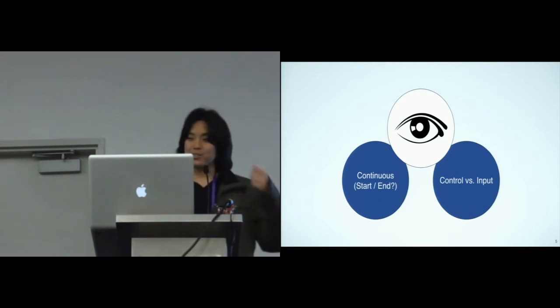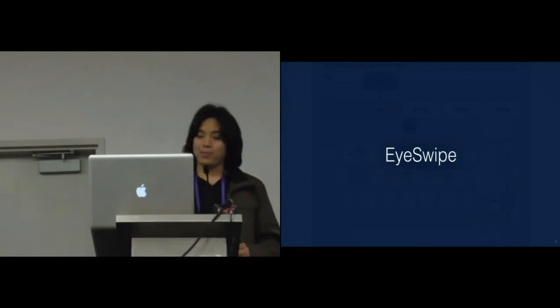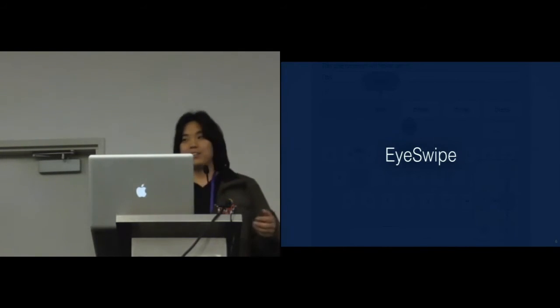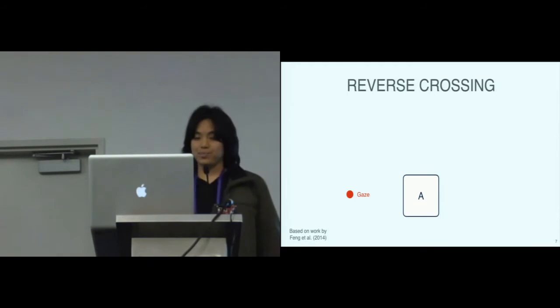Considering these challenges, we propose iSwipe. So the first challenge is how to determine when the user started and stopped swiping a word. And instead of having to guess when these events occur, iSwipe requires the user to explicitly select the first and last letters of the word using reverse crossing. So to select a key with reverse crossing, the user must initially look at it, and shortly after that, an action button will pop up showing the available options. For example, start swiping.